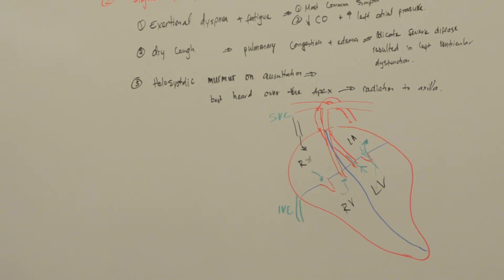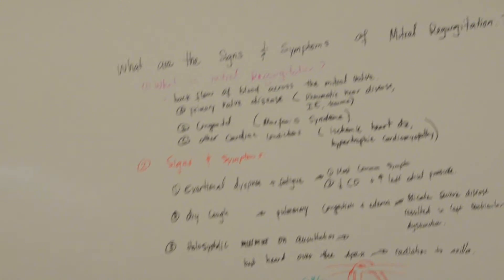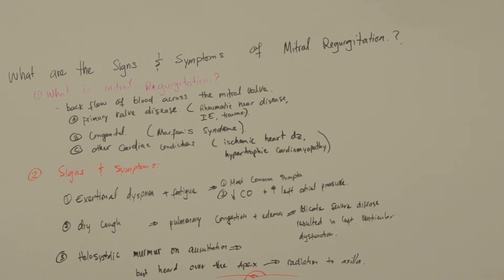There are certain diseases that cause this backflow of blood. The main one is primary valve disease, such as rheumatic heart disease, infective endocarditis, or trauma. The second is congenital conditions like Marfan syndrome. The third group includes other cardiac conditions such as ischemic heart disease and hypertrophic cardiomyopathy.